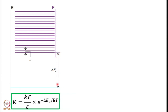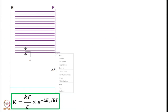Note that this delta E naught is a positive number here. This particular example is of an endothermic reaction because the energy corresponding to the product is higher than the zero-point energy corresponding to the reactants. And then we started discussing Le Chatelier's principle.